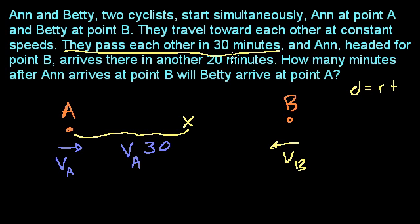And then Ann headed for point B arrives there in another 20 minutes. So this is going to take her another 20 minutes. So this distance right here is what? She's going at the same velocity, but it takes her 20 minutes. So the distance is velocity times time. So it's VA times 20, or 20VA.